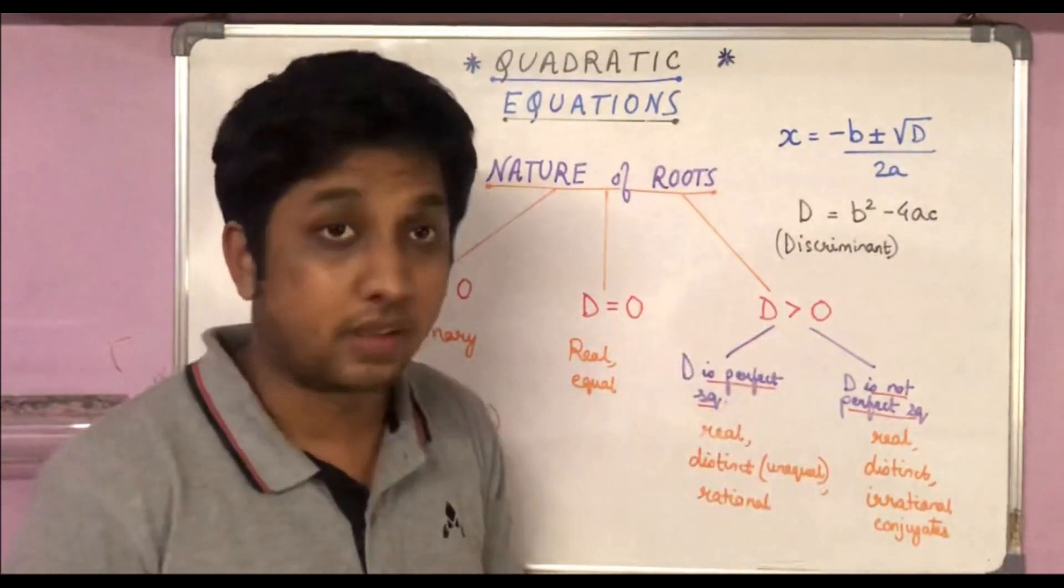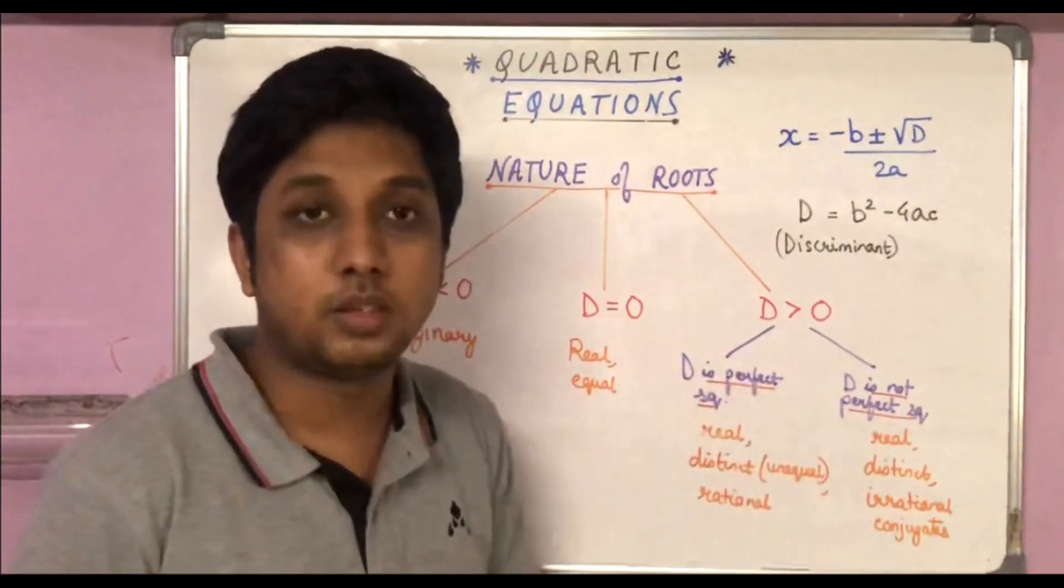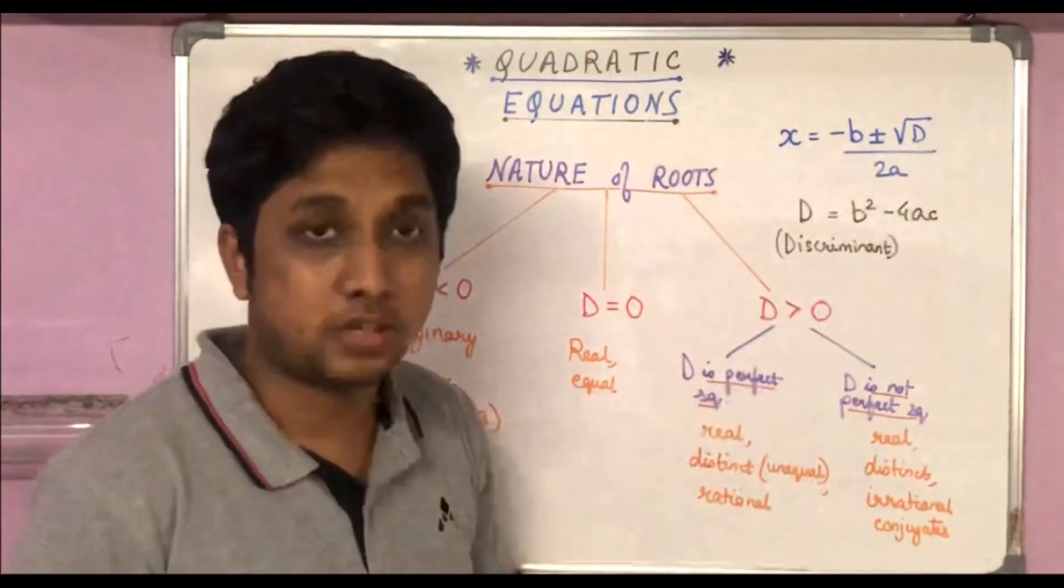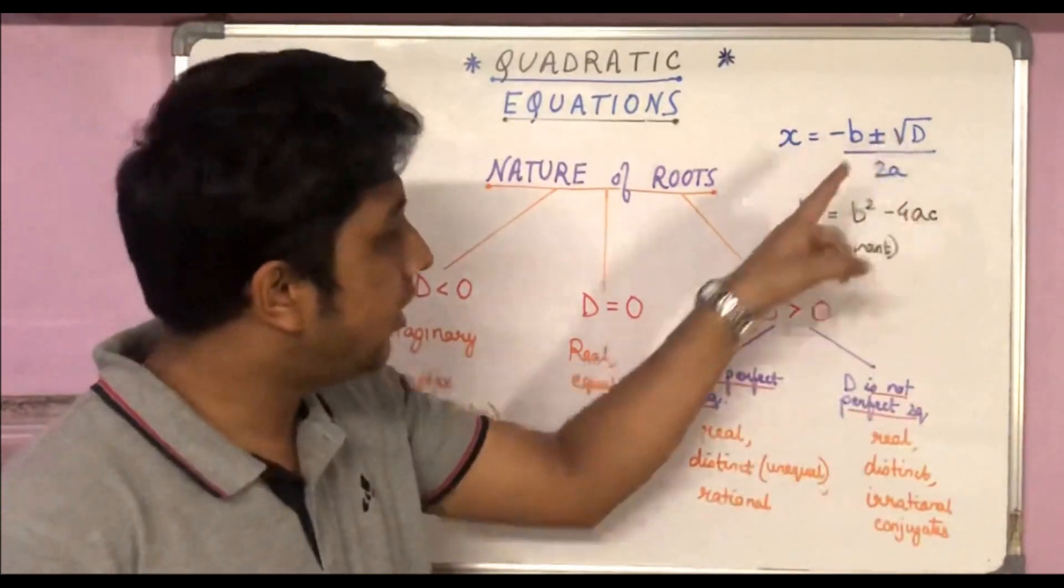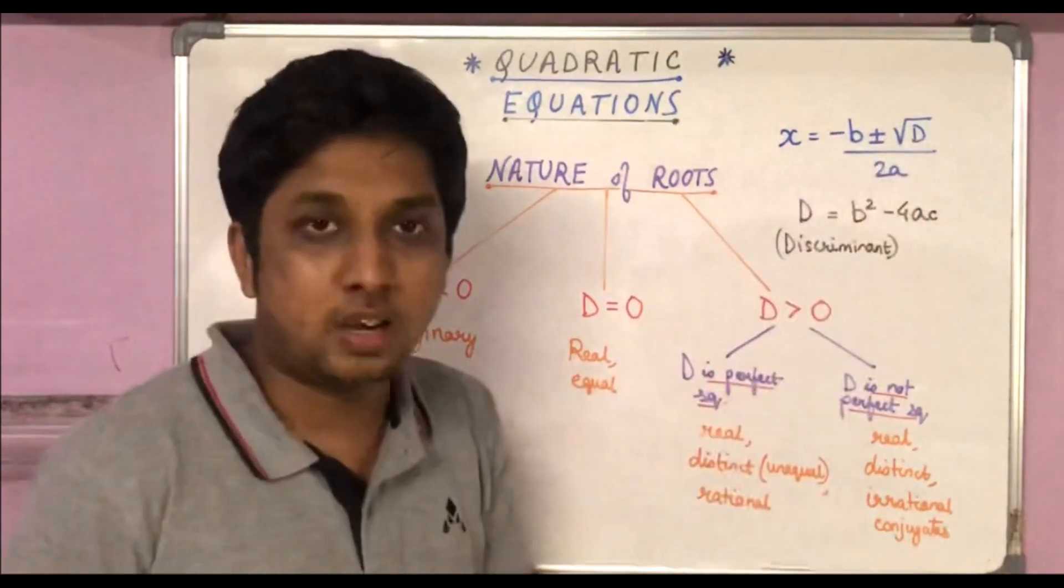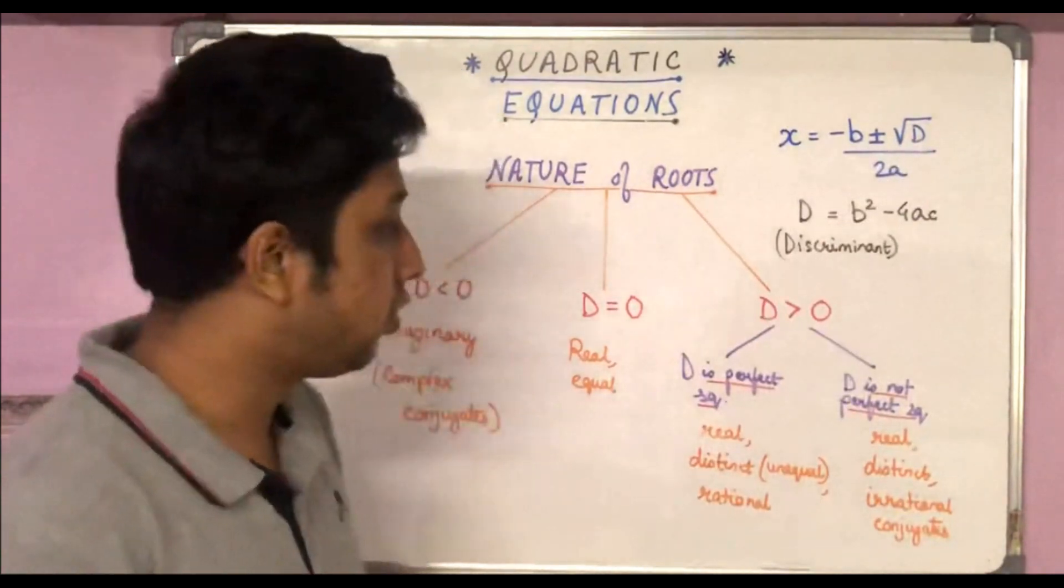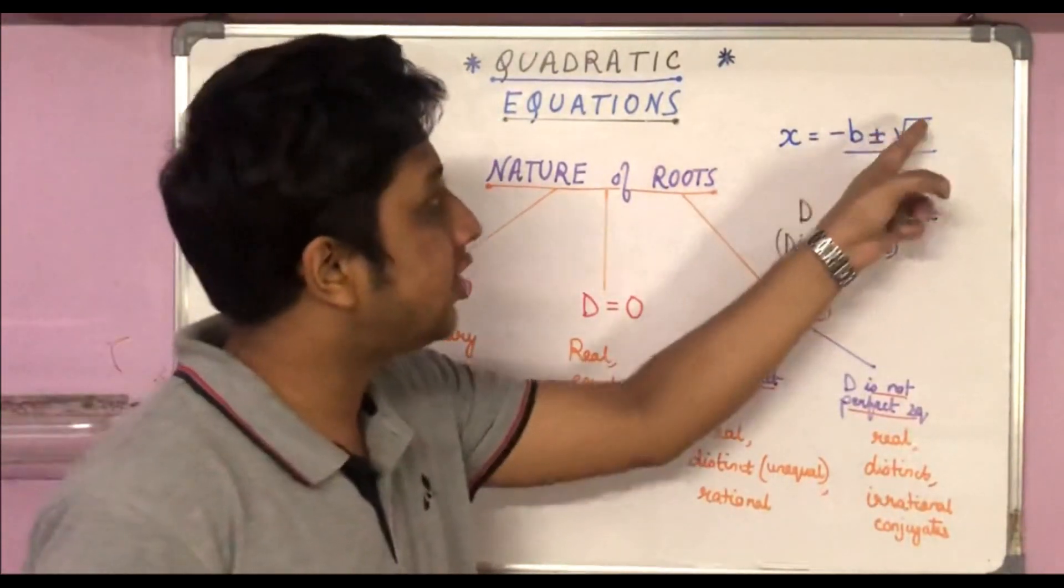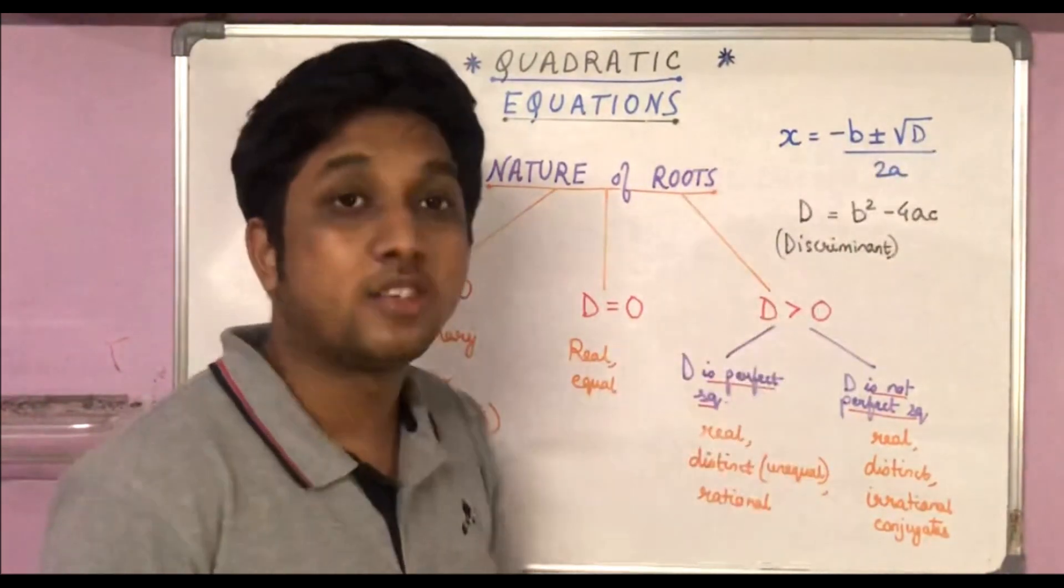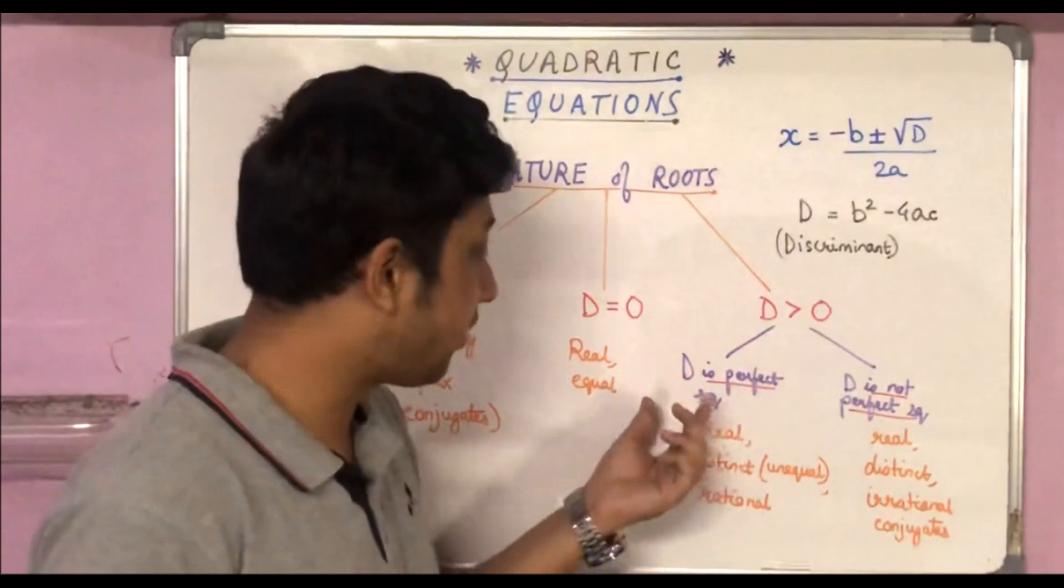If D is greater than 0, that means D is positive. Now here we have two more subdivisions. If D is a perfect square, then square root of D will be a rational number. For example, if D is 9, then root over 9 would be 3, so minus b plus minus 3 divided by 2a. Then we would get by calculating rational roots. So if D is a perfect square, we would get real and distinct, that is obviously unequal, and rational roots.